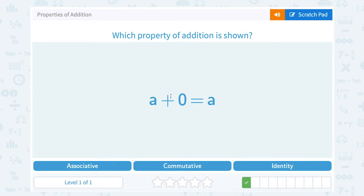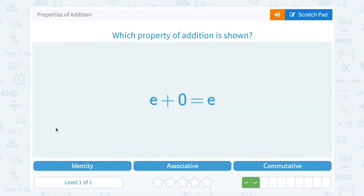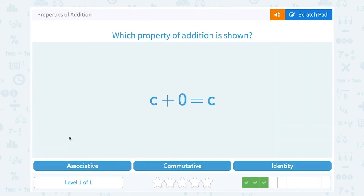A plus 0 equals A. This is another example of identity property because when we add 0 to that number it does not change its value. It's still equal to A. E plus 0 equals E. Identity property again. Adding 0 does not change our value. C plus 0 equals C. Identity property.